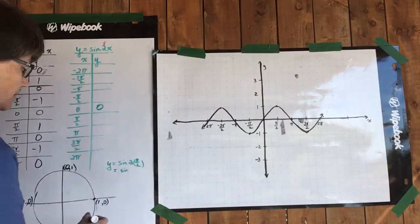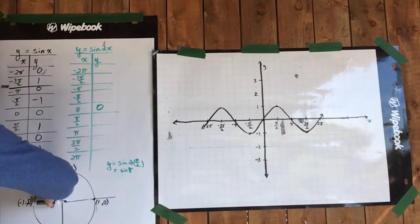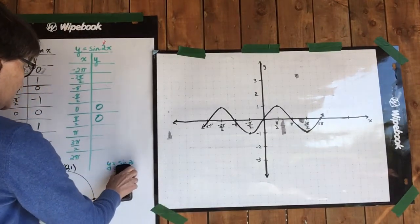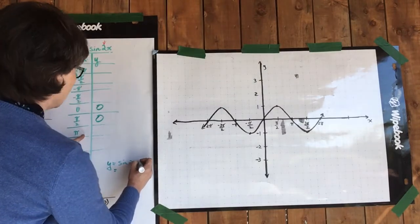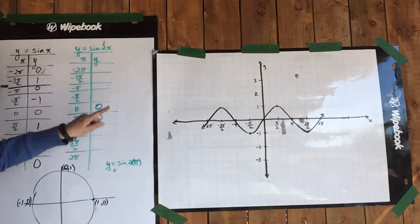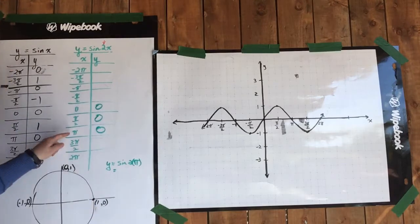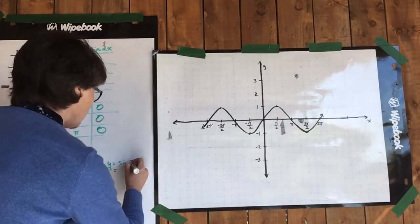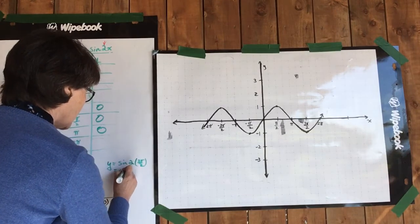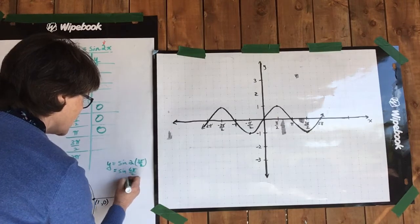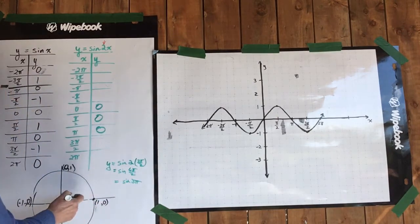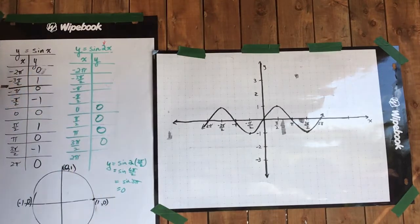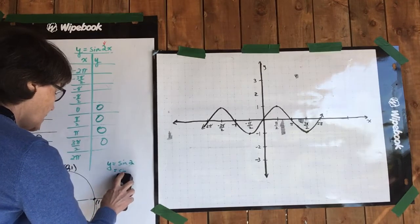When we simplify, we're actually looking for the sine of pi, and when we look at the unit circle, sine of pi is 0. Next: sine of 2 times pi. We're substituting pi in for x, so the sine of 2 pi is 0. Next one: 3 pi over 2, which simplifies to sine of 3 pi, which equals 0 as well. And 2 pi, the last one in the positive direction.